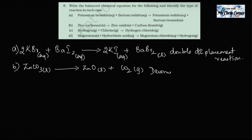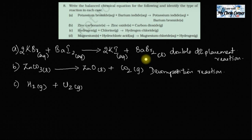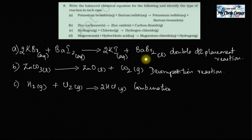Next, hydrogen gas plus chlorine gas giving hydrogen chloride gas. There are two hydrogens on the left but only one on the right, so I'll put 2 in front of HCl. Now there are two chlorines on the right as well, so the equation is balanced by putting 2 in front of HCl. Two components on the left have combined to give one component, so this is a combination reaction.